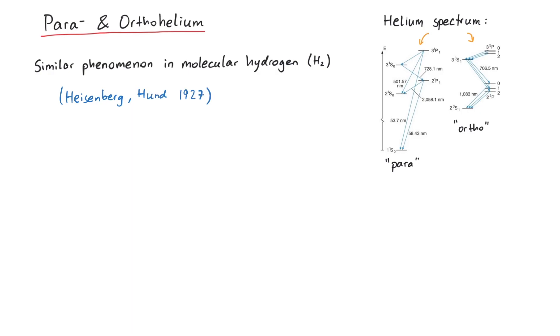The similarity between helium and molecular hydrogen is that both are systems with two protons, or in other words, two spin-1/2 particles. In a system with two spin-1/2 particles, the two spins couple to a total spin, which can have two realizations.